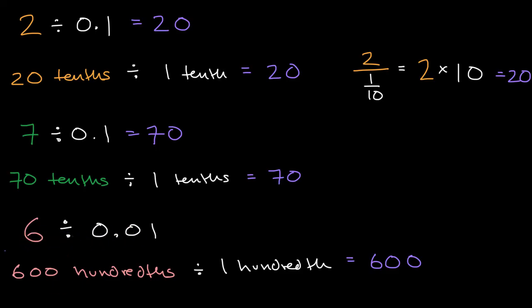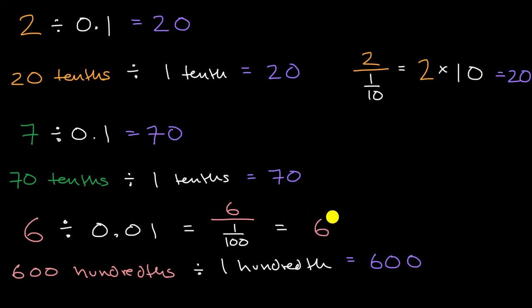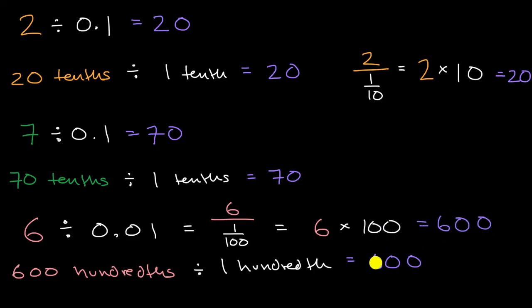Another way we could have approached this is with fractions. This is the same thing as six over one hundredth, which is equal to six times the reciprocal of one hundredth — that's six times one hundred over one, or just six times one hundred, which once again gets us to 600. So you can see the pattern: when you divide by a hundredth, that's equivalent to multiplying by a hundred. When you divide by a tenth, that's equivalent to multiplying by 10.